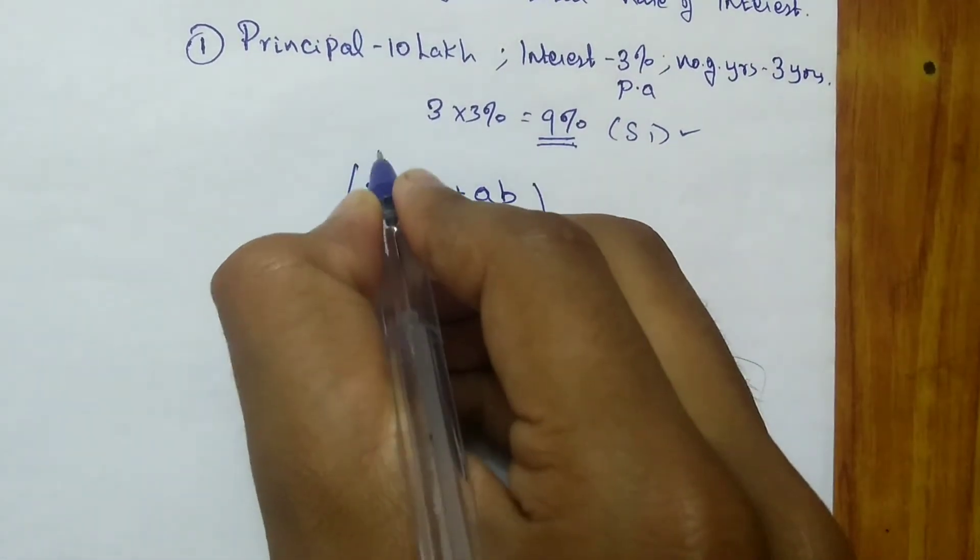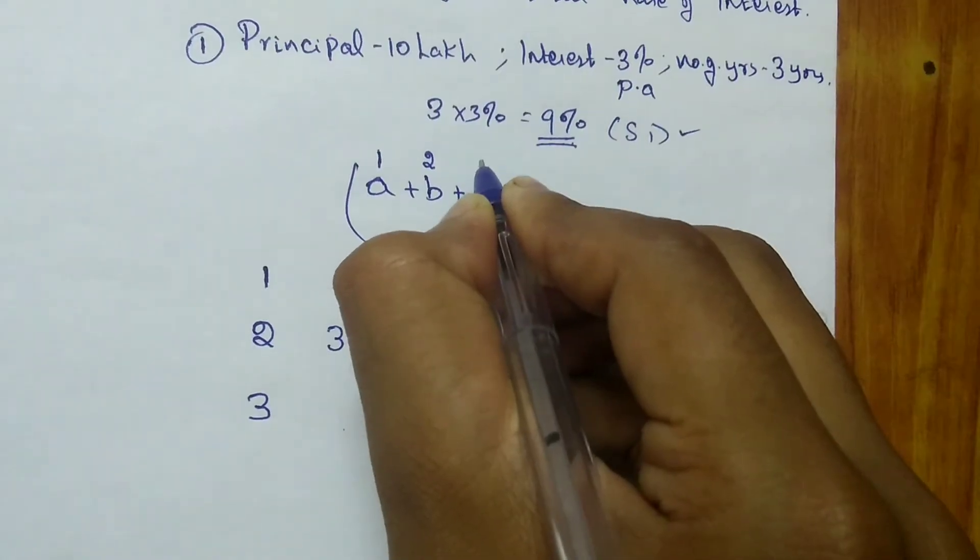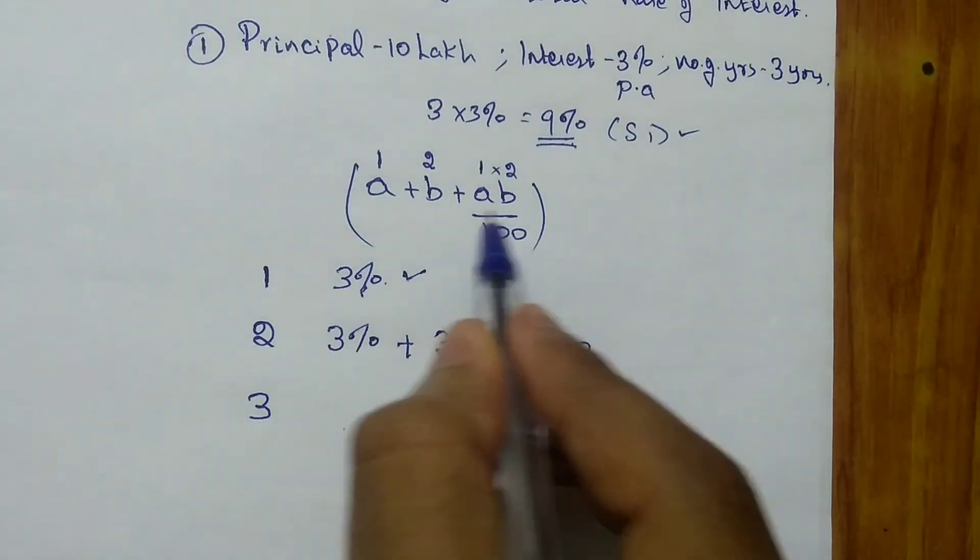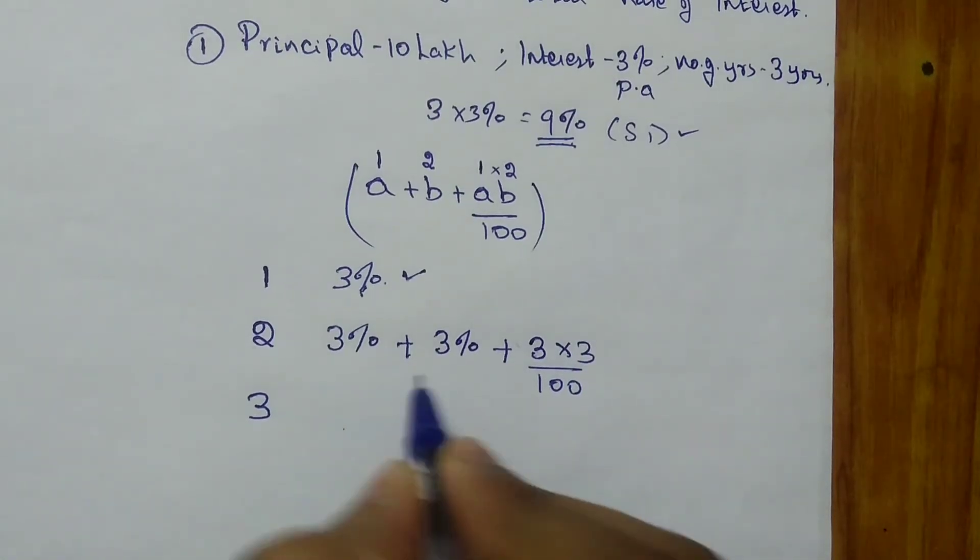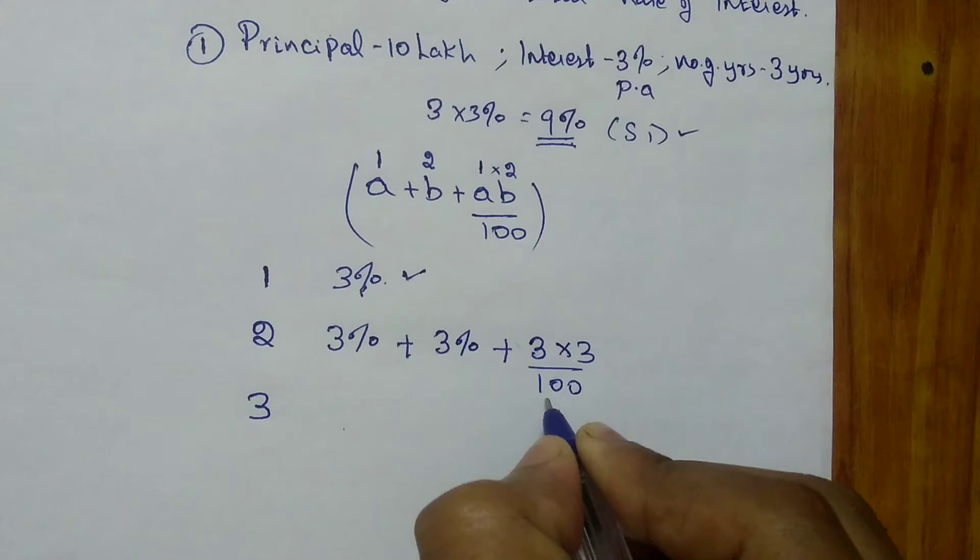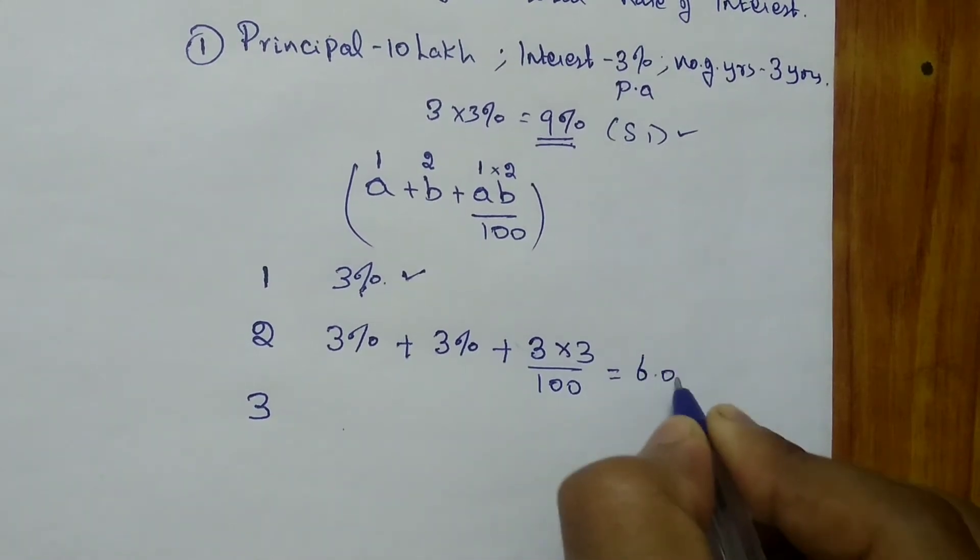So it is in the format of a plus b plus ab by 100. So first year's interest, second year's interest, first year's interest times second year's interest. So a plus b plus ab by 100. So solving this, you get 3 plus 3, 6 plus 3 times 3 by 100, 0.09. So it is 6.09%.